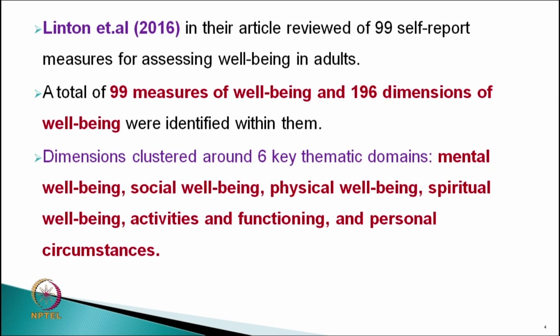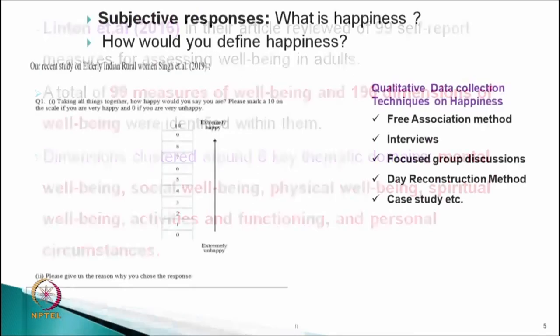The main dimensions identified were mental well-being, social well-being, physical well-being, spiritual well-being, activities and functioning, and personal circumstances. So now you are well equipped with the idea that there are a number of psychological tests to measure happiness, well-being, or mental health.